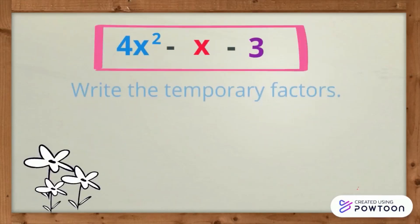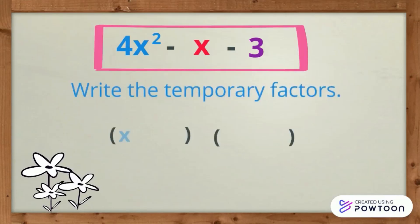The temporary factors are quantity x plus 3, quantity x minus 4.